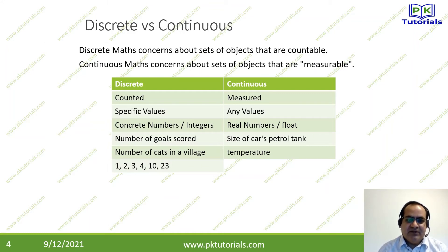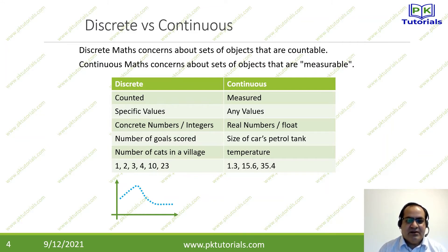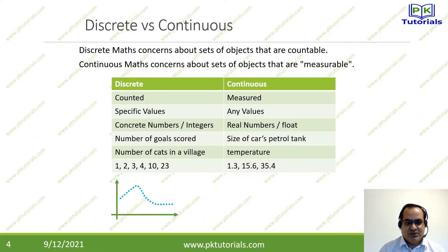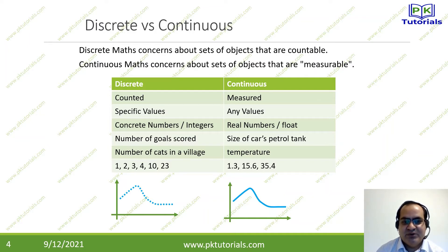Discrete numbers are like 1, 2, 3, 4, 5, 10, 23, 25. Continuous numbers are like 1.3, 15.6, 35.4 — continuous will take any value. We can also show this on an XY plane graph. Discrete means separated — not connected. In the graph, the dots are not connected with each other. On the other hand, the graph of continuous data is a complete line with no breakage or dots. That is the difference between discrete and continuous.